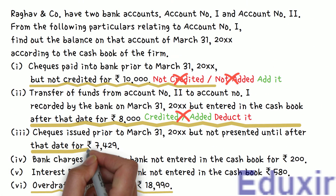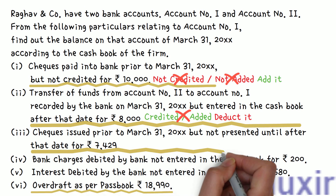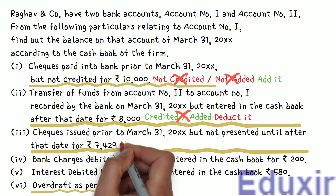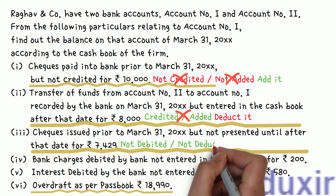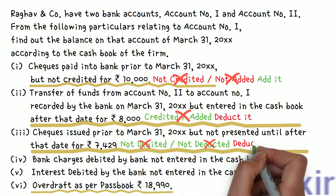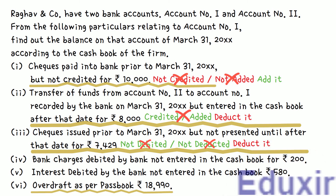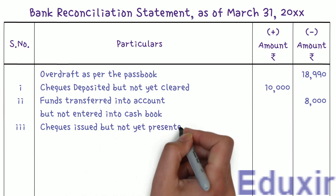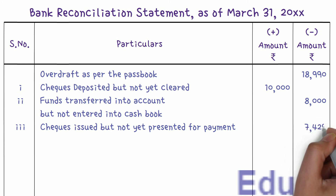In this case, checks for 7,429 rupees are entered before March 31st, 2000+ but are not yet presented for payment. The business credits these check amounts in the cashbook when issuing them to creditors or suppliers. However, as these checks are not yet presented for payment, they are not yet debited in the bank passbook. We need to deduct this check amount from the passbook balance to get the cashbook balance. Let us write 'checks issued but not yet presented for payment' and enter 7,429 rupees in the minus amount column.